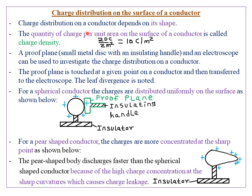The quantity of charge per unit area on the surface of a conductor is called the charge density. If you want to compute the charge density on a given conductor, you simply take the amount of charge and divide it by the area of that particular conductor.